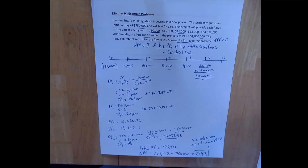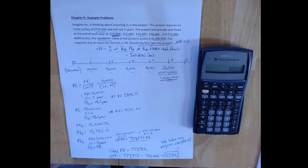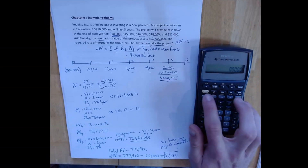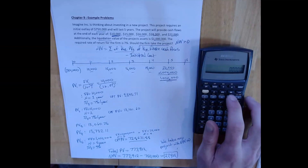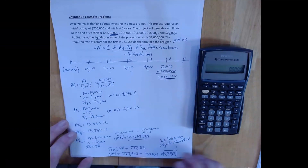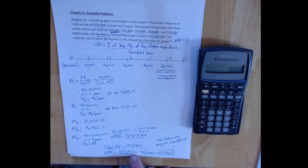We can also solve this problem using the calculator. Using the financial calculator, we use the cash flow environment. In the graphing calculator, you'll need to use the NPV function in the finance apps section, and I've provided instructions on As You Learn for that. In the financial calculator, the cash flow environment is right next to the second button — cash flow, net present value, internal rate of return. The cash flow environment allows us to input a series of cash flows including a negative cost, and then in one step take the net present value.